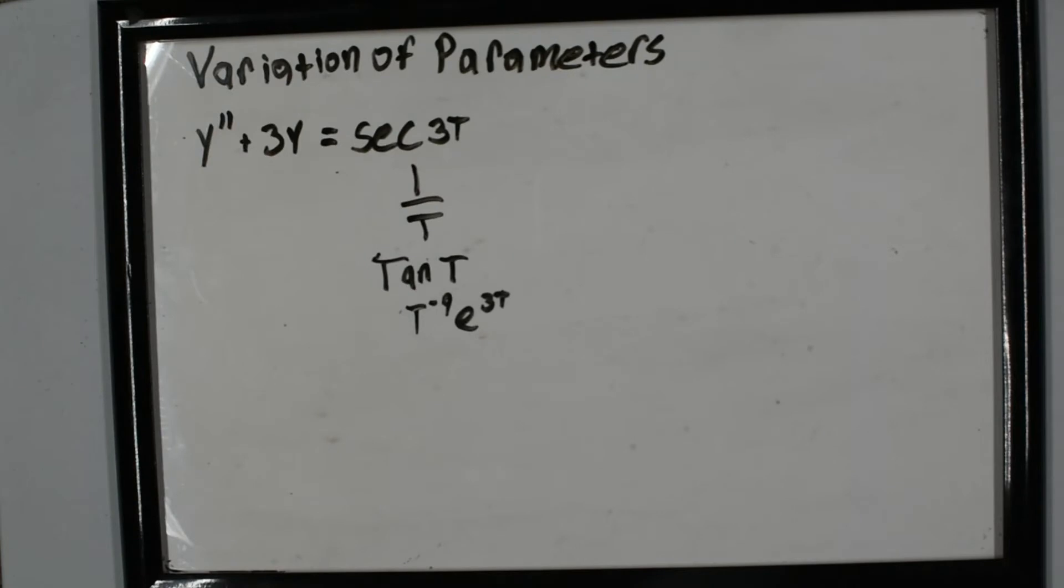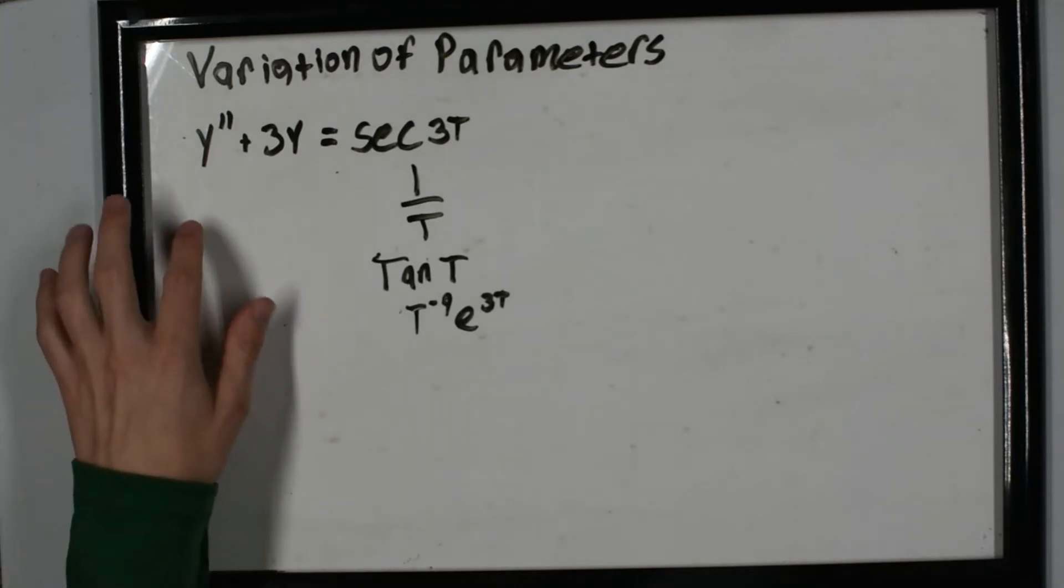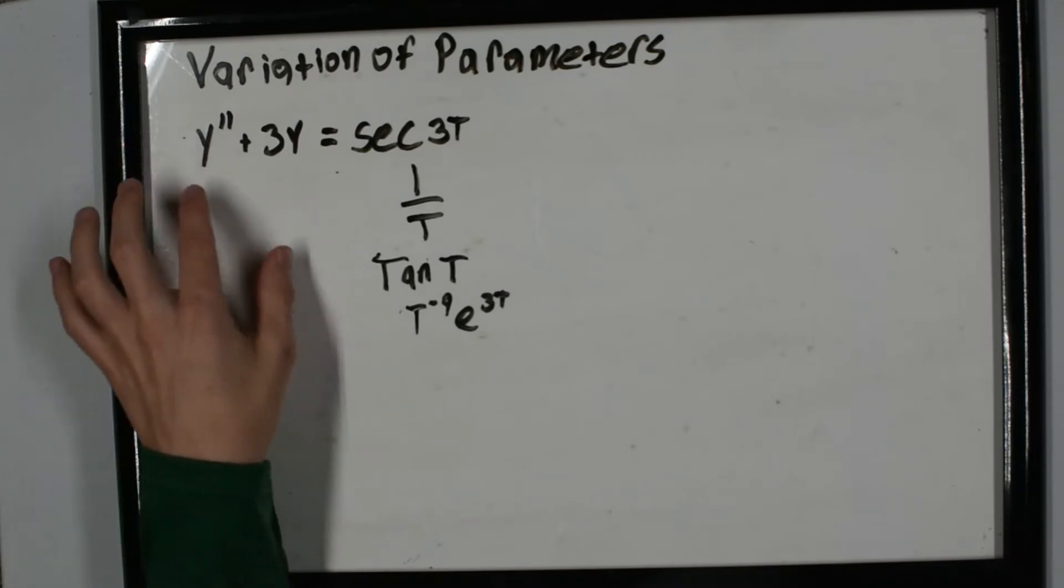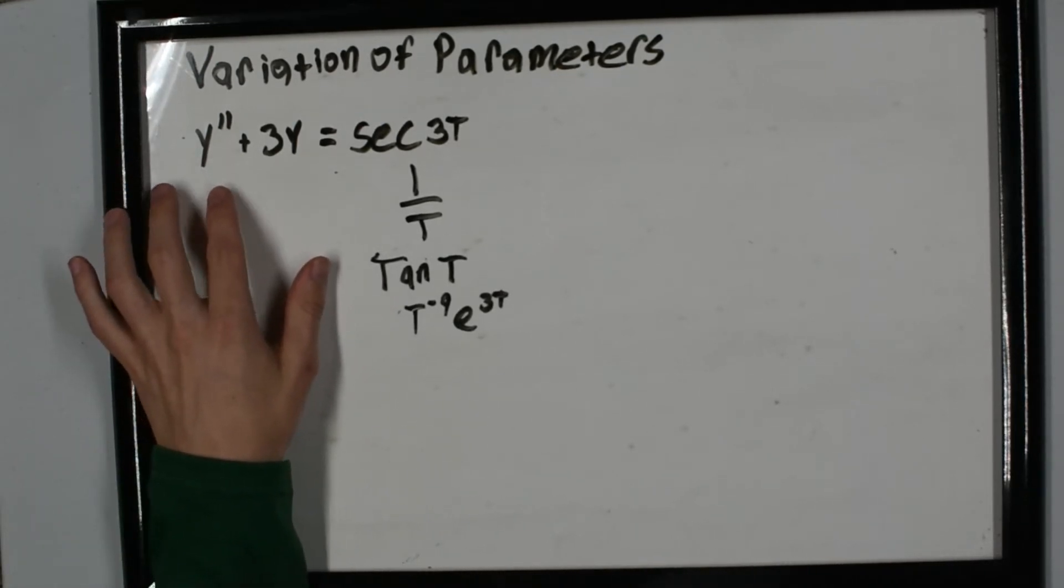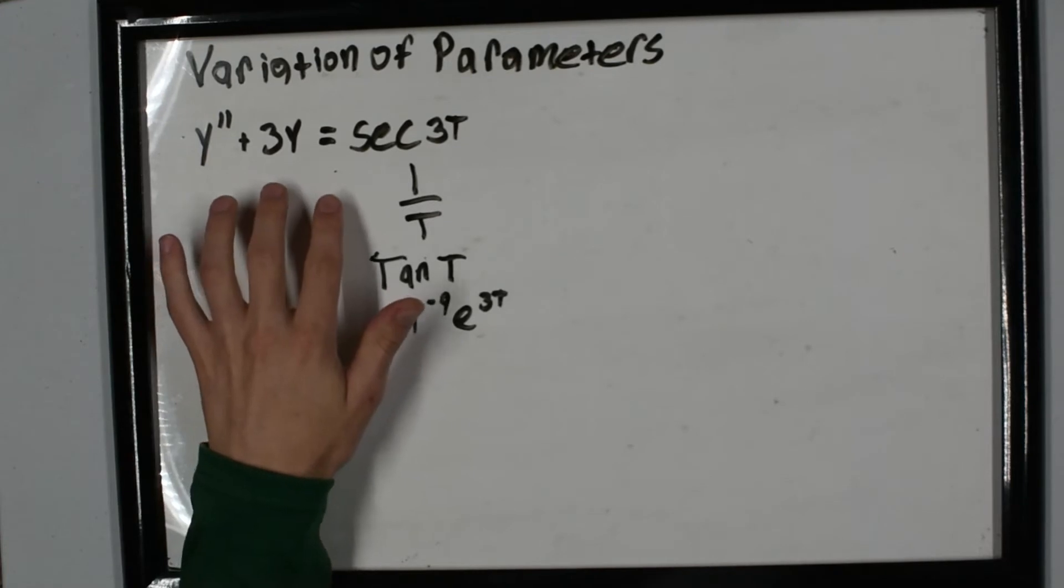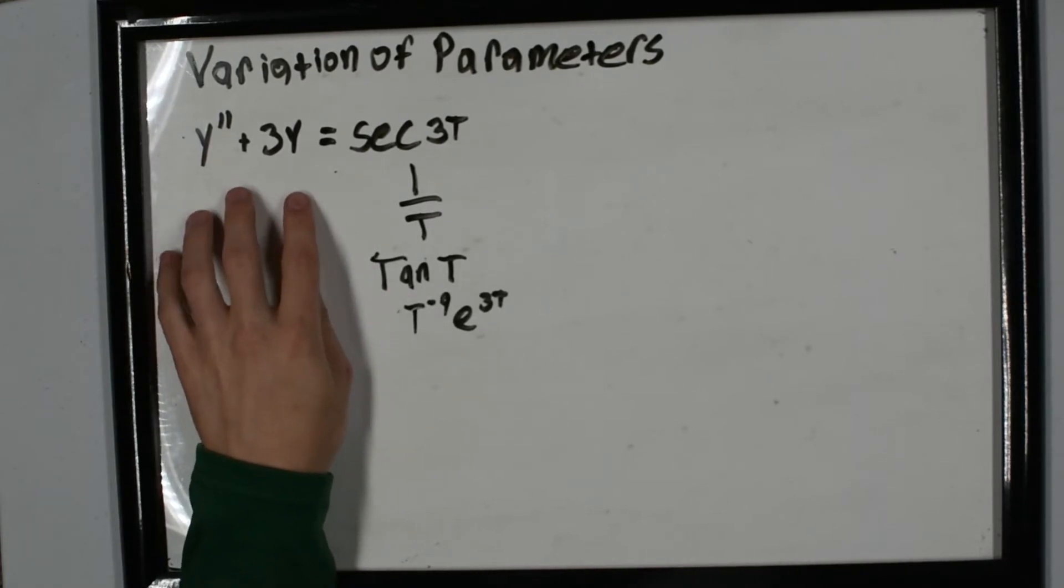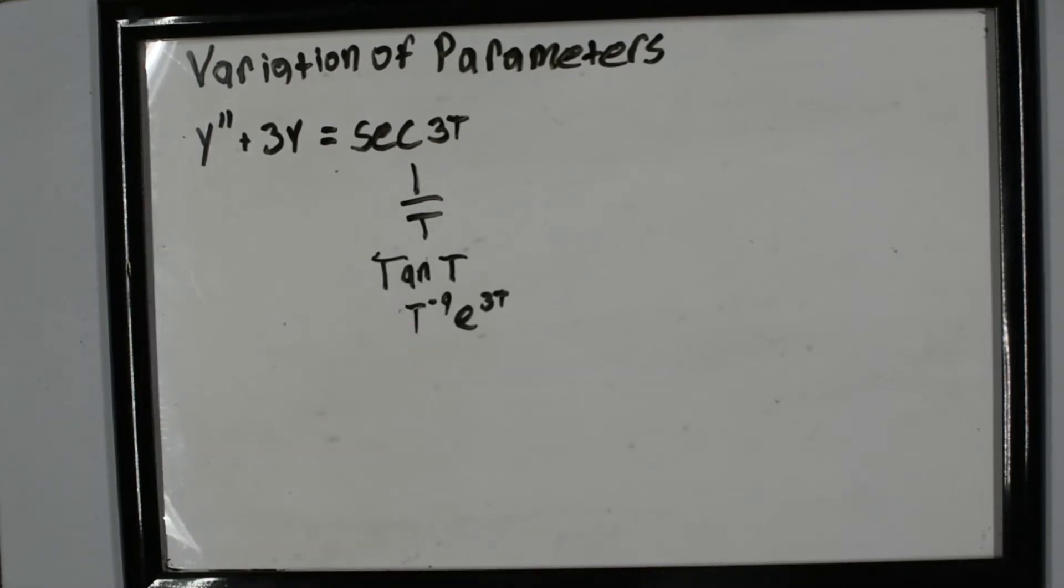Now let's discuss when to use variation of parameters to find a particular solution. You can have any differential equation on the left side with any combination of derivatives and y. You want to use variation of parameters when you have functions such as secant, tangent, cosecant—any trig function that's not sine or cosine.